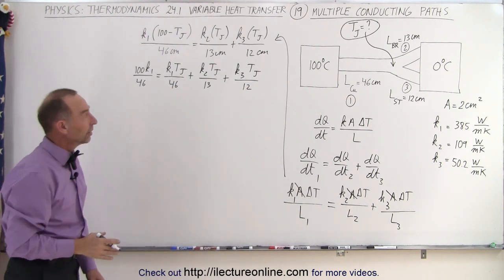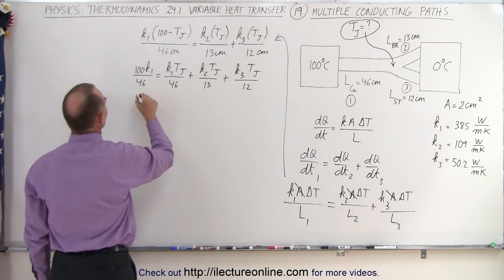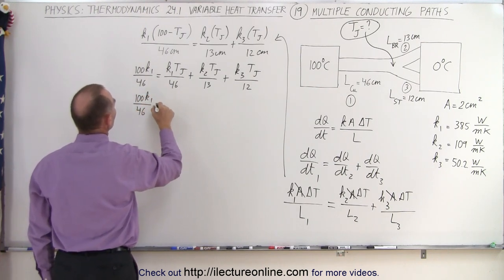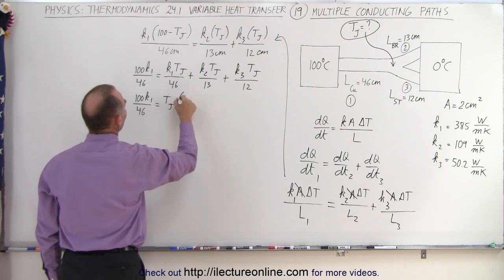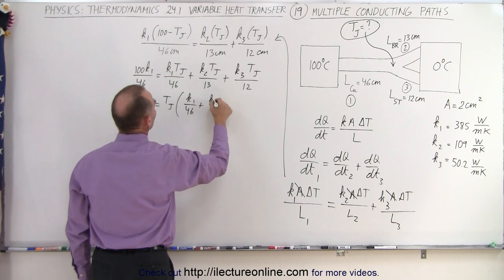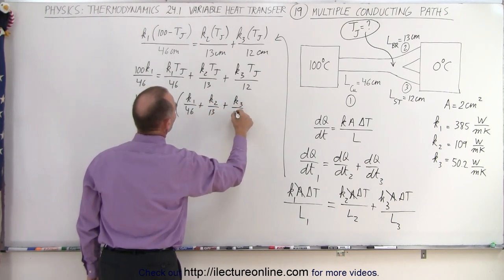We can factor out T_J on the right side, so this becomes 100 K1 over 46 equals T_J times the quantity K1 over 46 plus K2 over 13 plus K3 over 12.